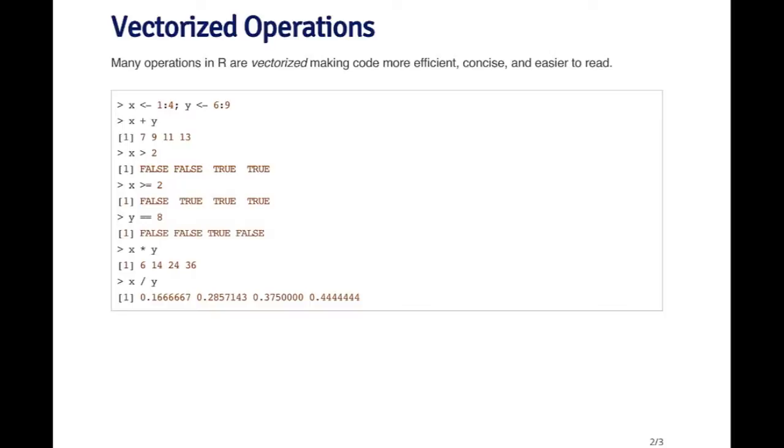When I say I want to add them, I mean I want to add the first element of x to the first element of y, the second element of x to the second element of y, and so on. In other languages, you might have to write a loop to do that, looping through each element and adding them one by one. But in R, you can just use the plus operator on the two vectors and it will add them together. So x plus y does what you would expect: it adds one to six, two to seven, three to eight, and four to nine, giving you the vector seven, nine, eleven, thirteen.